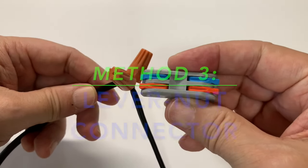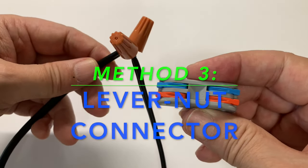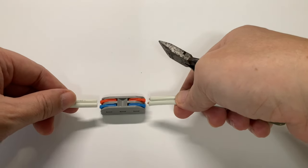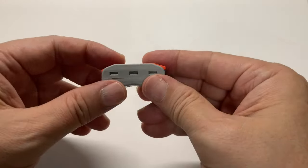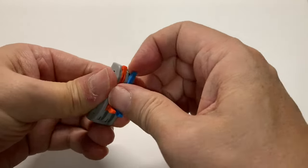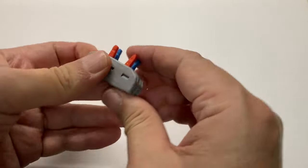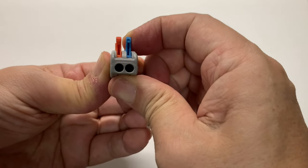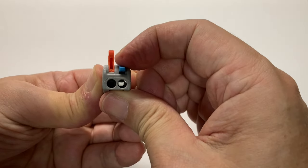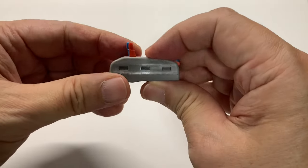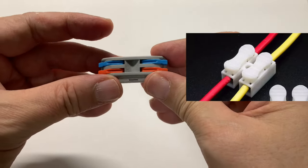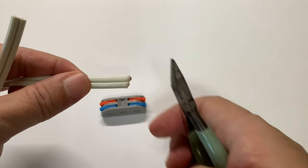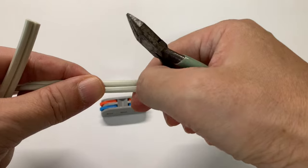The third method is with the use of lever nuts or lever connectors. So instead of twisting the wires together, it uses a clip mechanism to clamp the wires using lever action. Lever nuts also come in different designs.